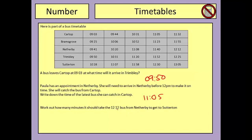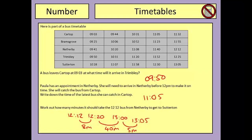The 12.12 bus from Netherby is going to get into Suterton at 13.05. Starting at 12.12, I'll add on 8 minutes to reach 12.20. From 12.20 I add 40 minutes to reach 13.00. The bus gets into Suterton 5 minutes later at 13.05. Adding up all the increments — 8 plus 40 plus 5 — gives a grand total journey time of 53 minutes.